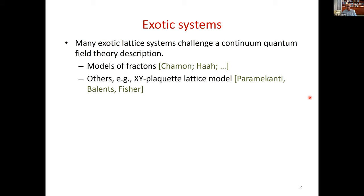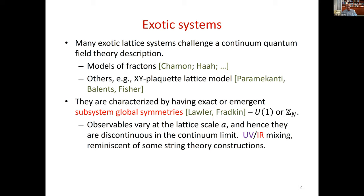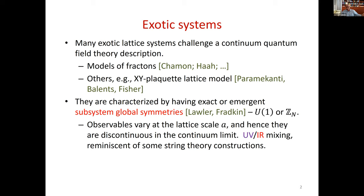This model will figure quite prominently in this talk because it's the simplest model I know of which exhibits some of the peculiarities I'd like to point out. The main point about these models is actually not the existence of fractals — fractals might or might not be there. The main reason these models are challenging for continuum quantum field theory is that they're characterized by having an exact or emergent subsystem global symmetry. As far as I know, subsystem symmetries first appear in a paper by Lowell and Fratkin, but they could have been earlier papers.